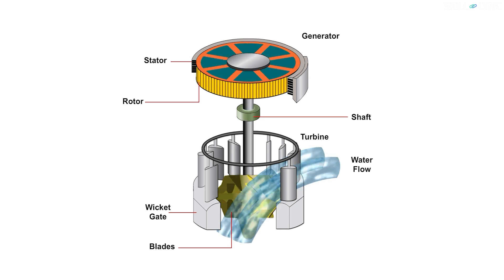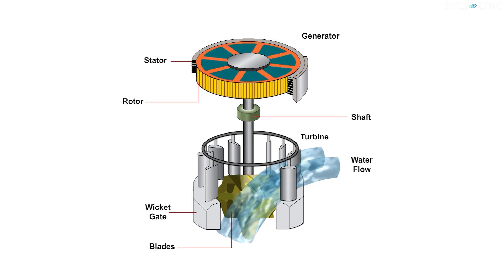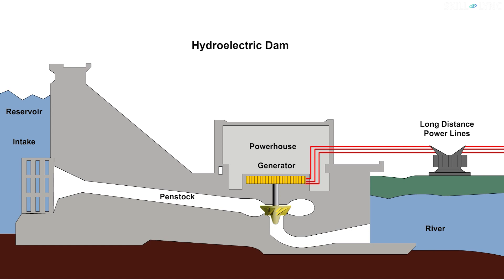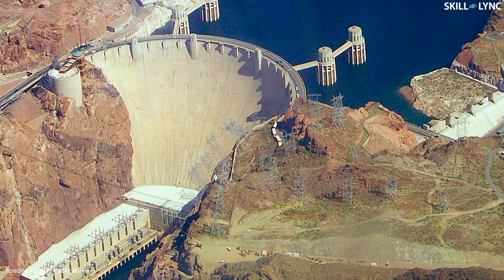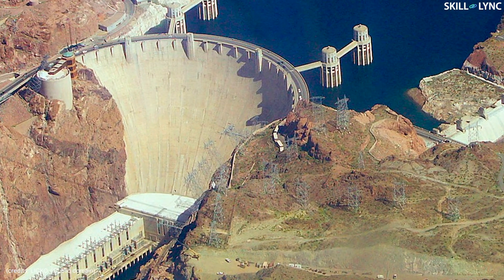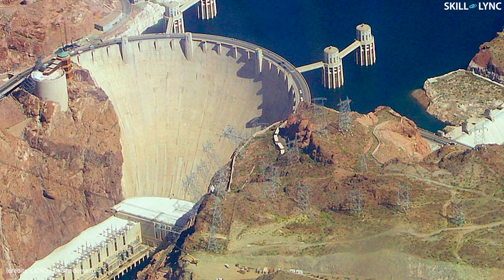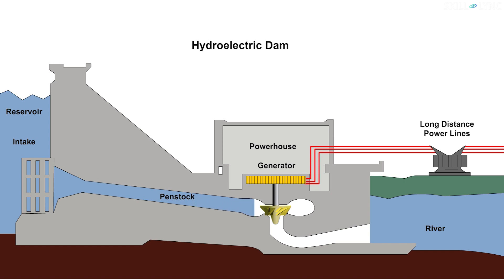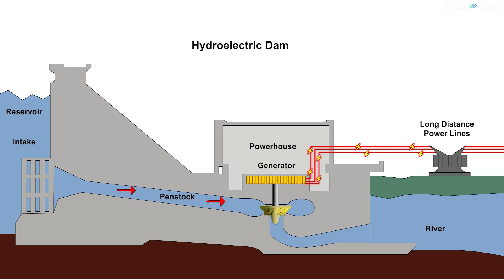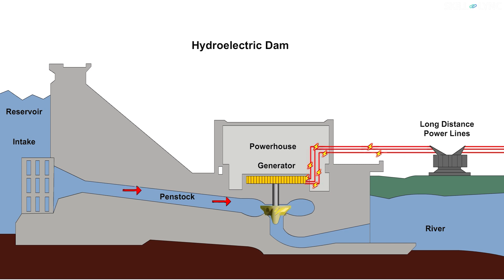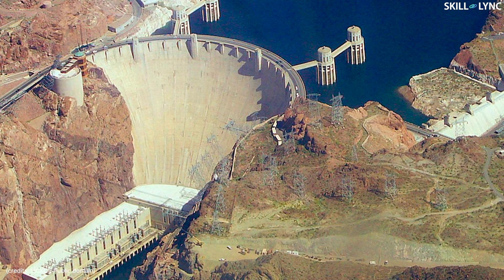In order to generate sufficient power, the water level must be at a considerable height from the turbine. The higher the head water level is, the greater will be its potential energy. This potential energy gets converted to kinetic energy as the water falls through the height, and thus finally turns the blades of a turbine. The turbine, being connected by a shaft, rotates the generator to produce electricity.